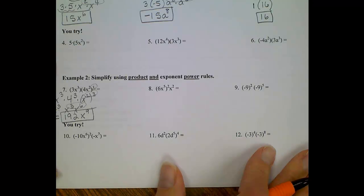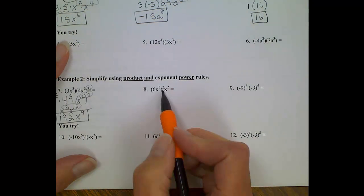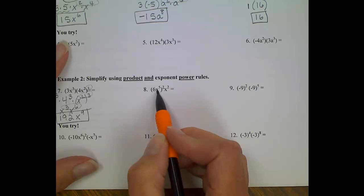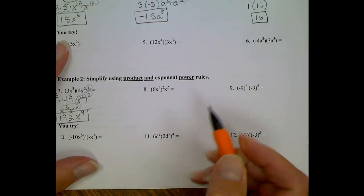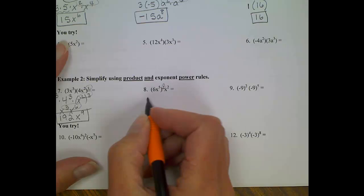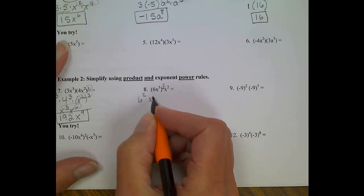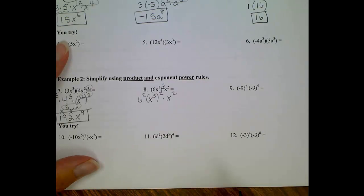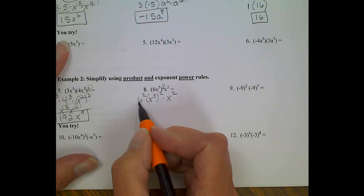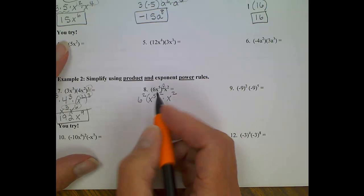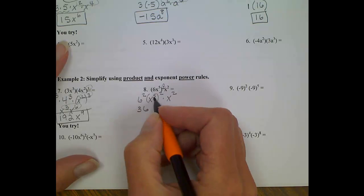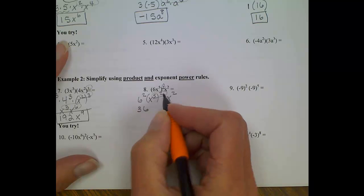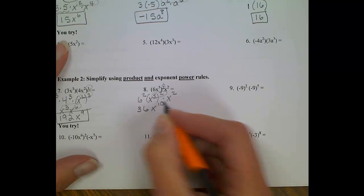Okay, number 8. Again, I have a parenthesis term raised to the 2nd power. This 2 belongs to every single term inside these parenthesis, so I'll worry about this x squared later. So taking care of that 2, I'll have 6 squared, I'll have x to the 5th squared times x squared. When I evaluate my mini terms here, 6 squared will give me 36. x to the 5th squared, I have a power to a power, so I'll multiply them and get x to the 10th times x squared.